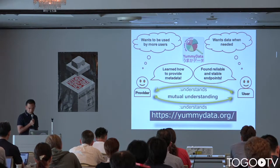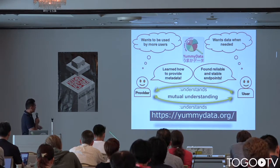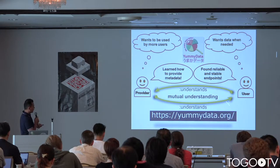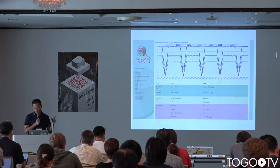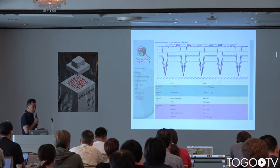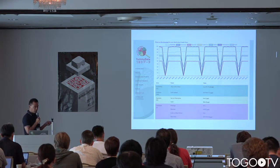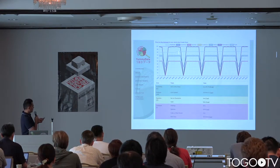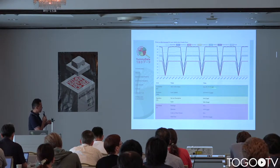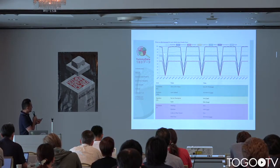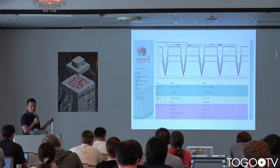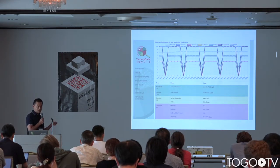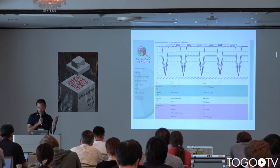The concept of Umaka Data is to build a community among database users and providers. Here is one example of a monitoring result from Yami Data — it monitors endpoints every day. You can see whether you can access a given endpoint, and view the history of service availability, which is important for knowing the reliability of an endpoint.